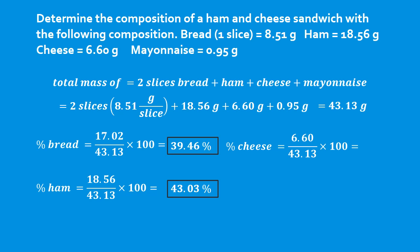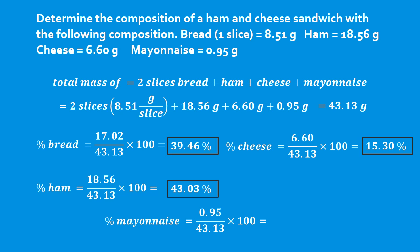For the percent cheese, 6.60 grams divided by 43.13 grams, times 100 — that's 15.30%. To find the percent of mayonnaise, we take 0.95 grams divided by 43.13, multiply by 100, giving us 2.2%. Or we could have added the percentages of bread, ham, and cheese and subtracted from 100, because the total percent adds to 100.